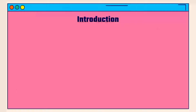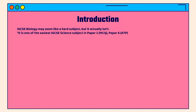So this is an introduction. IGCSE biology is not for everyone — it may look like a very hard subject because of its long content, but it's actually not. It is one of the easiest IGCSE science subjects. If you think sciences may be difficult, bio should be one of the easiest ones. Paper 2 is very straightforward — it's the MCQ paper — and paper 6, the alternative to practical, is also one of the most straightforward papers to answer.